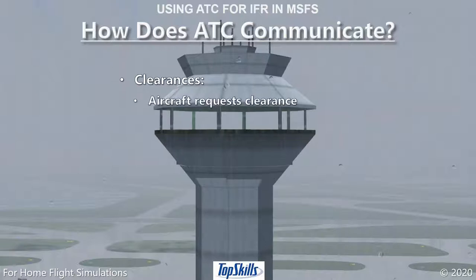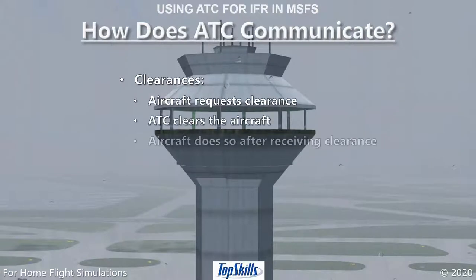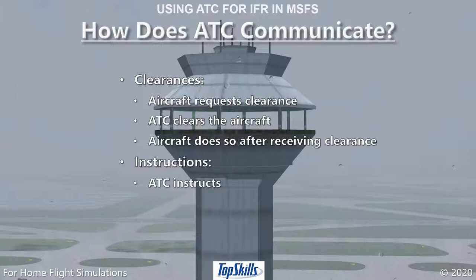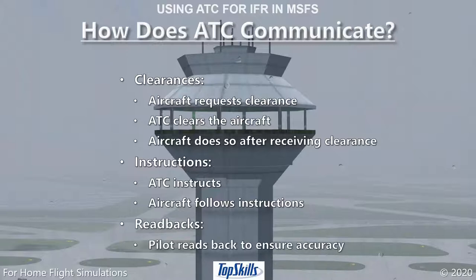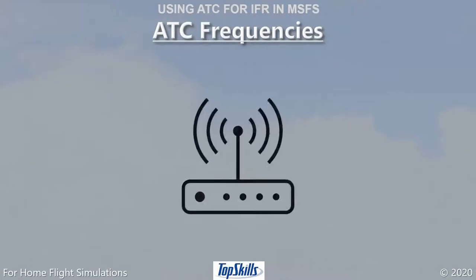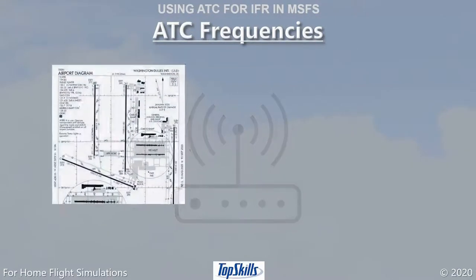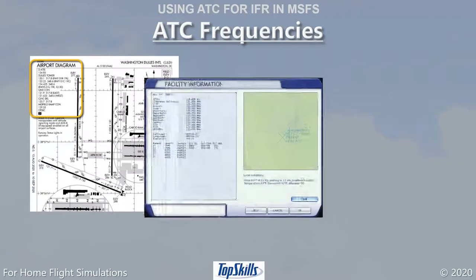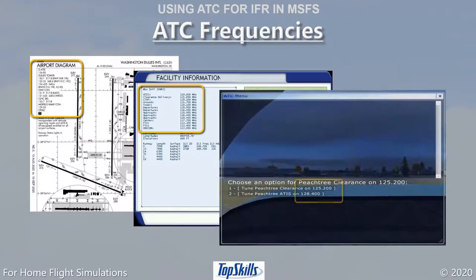Most communications received from air traffic control are clearances, or approvals. An aircraft requests clearance to do something, and air traffic control clears the aircraft to do that. The aircraft does so only after receiving a clearance. Some ATC communications are instructions — ATC instructs the aircraft to do something, such as taxi to a runway or head in a certain direction. Some ATC communications are readbacks, where the pilot repeats the communication to ensure accuracy. Frequencies for ATC communications are shown on aviation charts, on the map feature of Microsoft Flight Simulator, and in the ATC window itself.